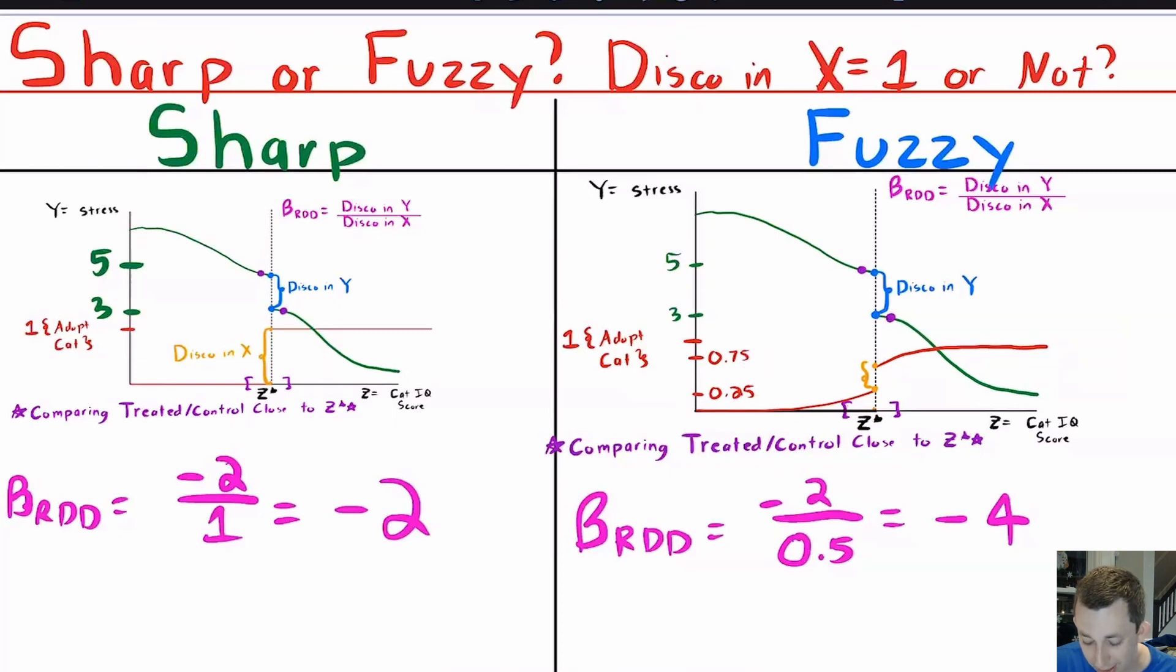So in both cases, if we had a discontinuity in y at the threshold of minus two, here in a sharp RD, we would calculate an average treatment effect of minus two. And here in the fuzzy RD, we would estimate this effect to be negative four. Notice that when we have a lower compliance rate, we tend to have a higher LATE or a more negative LATE. But you also might think that well, maybe this discontinuity in y right at the threshold would be smaller if we didn't have such a high jump. So maybe instead of three and five, maybe this is like 4.5 and maybe this is like 3.5. So you have negative one over 0.5, which will be back to your original two, something like that. But again, the main thing here is a fuzzy RD is when your jump in treatment status at the threshold is not one. And a sharp RD is when your jump in treatment at the threshold is exactly equal to one.